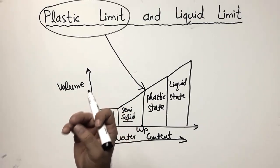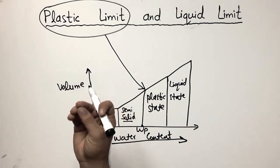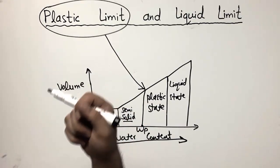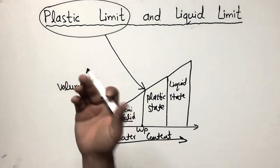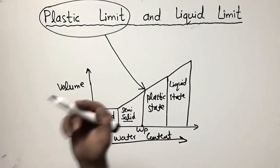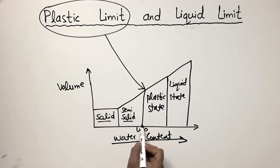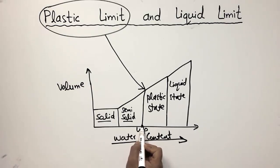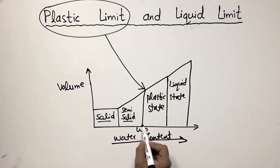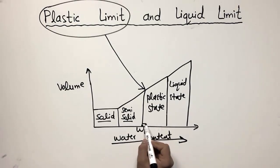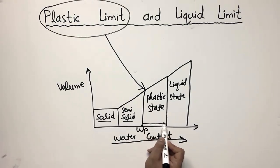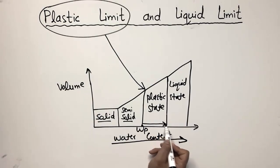What does it mean? The plastic material means it is the state at which the soil can be workable enough to be moulded in any shape. This is the moisture content at which the soil begins to behave as plastic. And then increasing the water content up to a certain amount, we still remain in the plastic state.